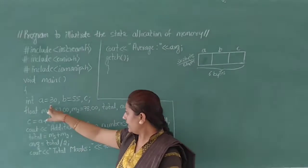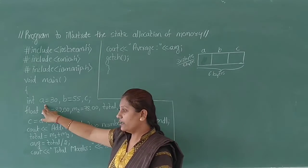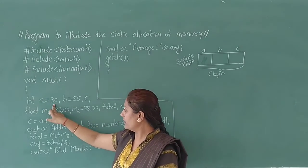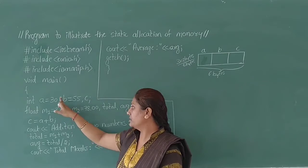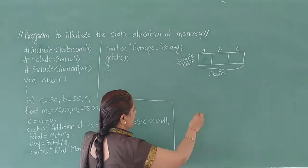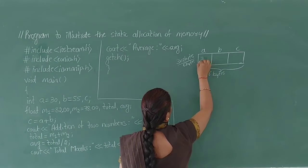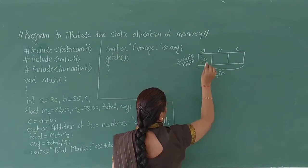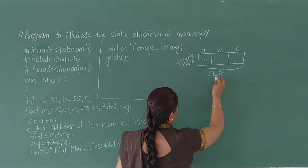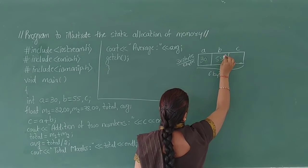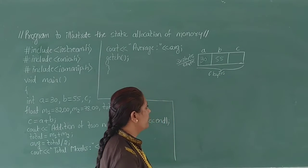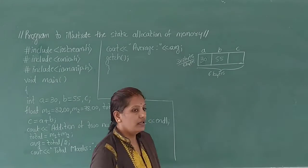In the declaration, variable A is initialized with the value 30 and variable B is initialized with the value 55. The value 30 is stored in the memory location of variable A, and 55 is stored in the memory location of variable B.